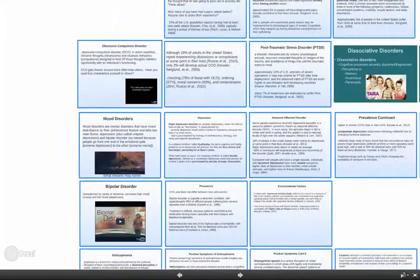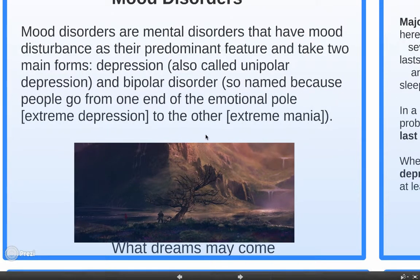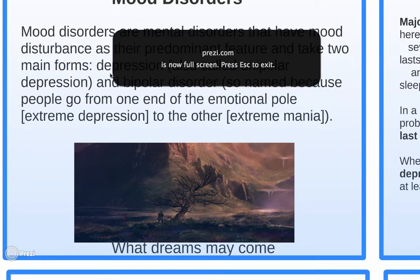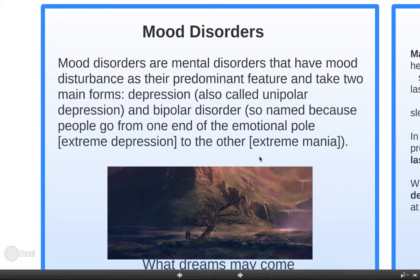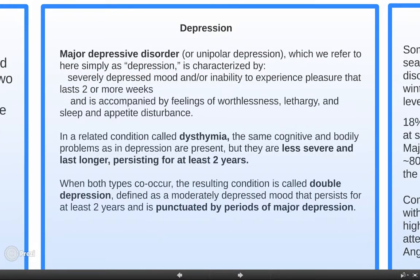Welcome back. We're going on to mood disorders. Mood disorders are mental disorders that have mood disturbances as their predominant feature, and they take two forms: depression and bipolar disorder. With bipolar disorder, people go from one extreme of the emotional pole — extreme depression — to the other extreme, mania. Depression is also called unipolar depression.